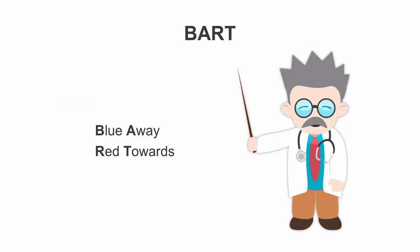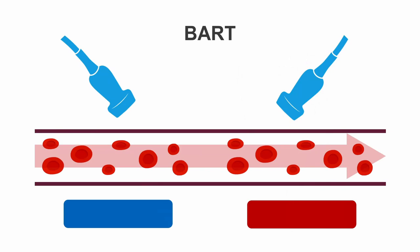But first, an easy way to remember what you're seeing on Doppler is to remember the word BART. Blue away and red towards. Thus, the colors that you see on Doppler don't always correlate with blue for vein and red for artery. Here you can see that the probe on the left is angled to view the blood as it is flowing away from it. Thus, the image will look blue on ultrasound.